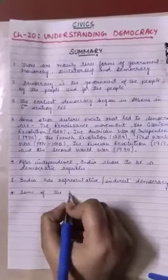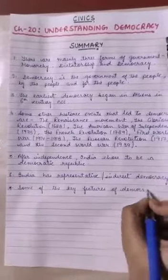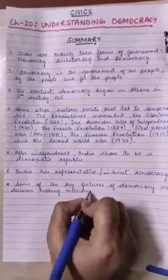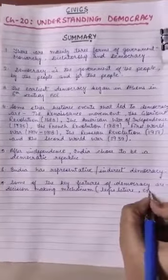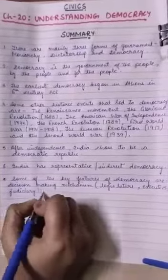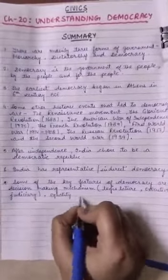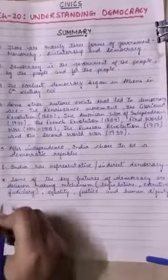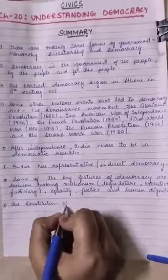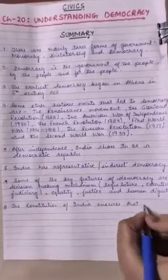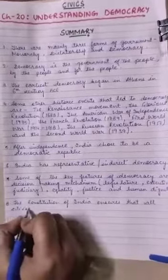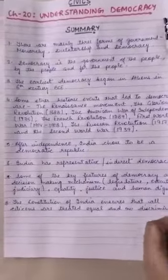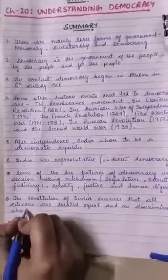Some of the key features of democracy are decision-making mechanisms such as legislature, executive and judiciary, equality, justice and human dignity. The constitution of India ensures that all citizens are treated equal and no discrimination should be done.